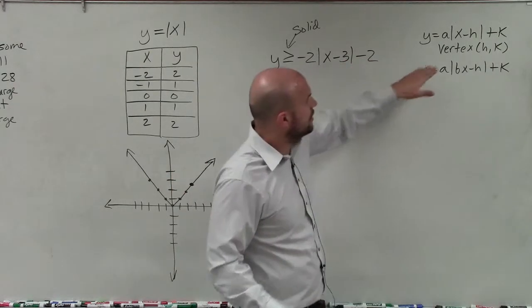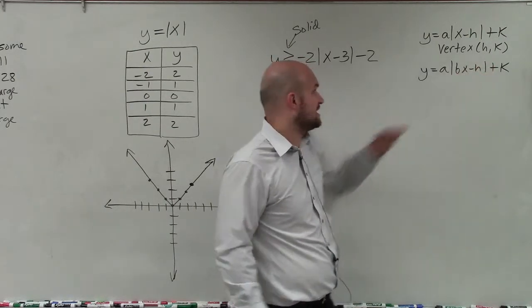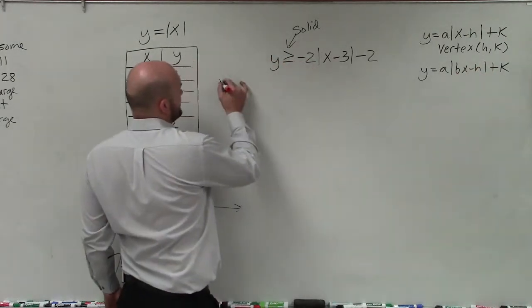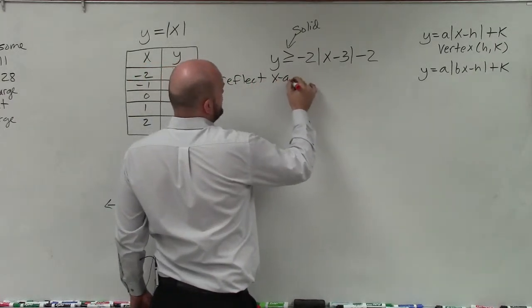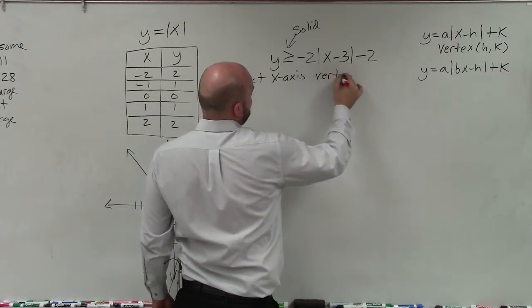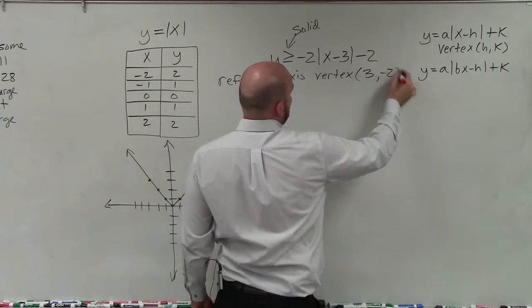So now I know where my graph is shifting left or right because I know the new coordinates of the vertex. So I'm going to write down everything we have. So I'm going to say reflect my x-axis. And I'm going to say my new vertex is at the point 3, negative 2.